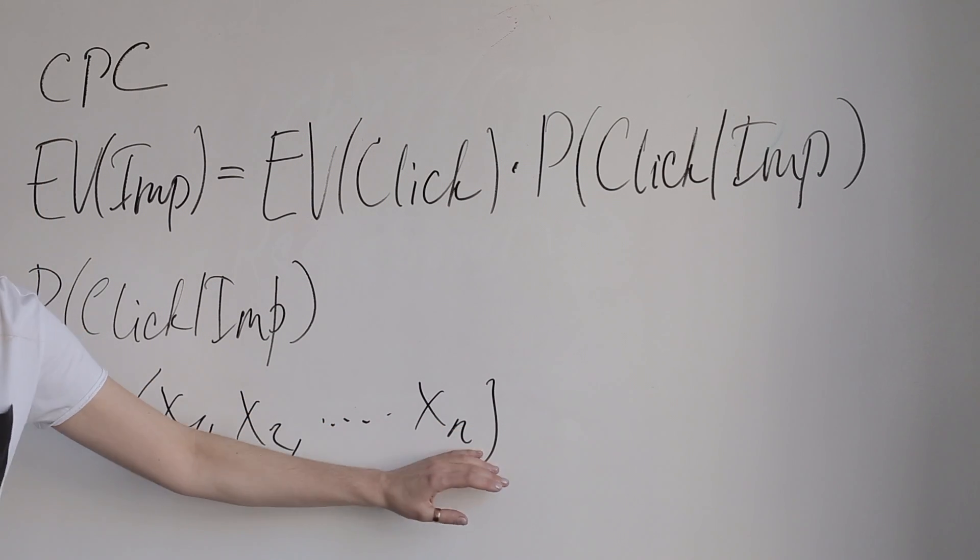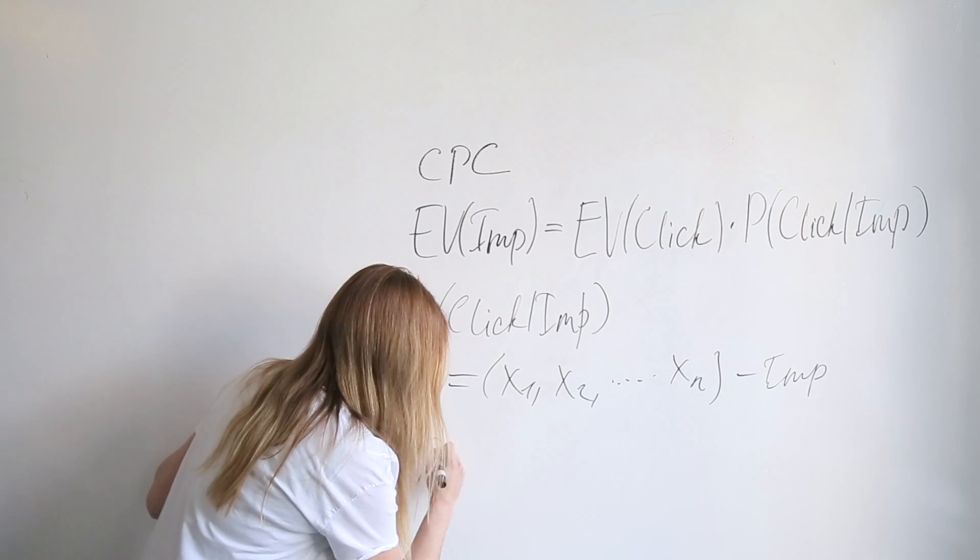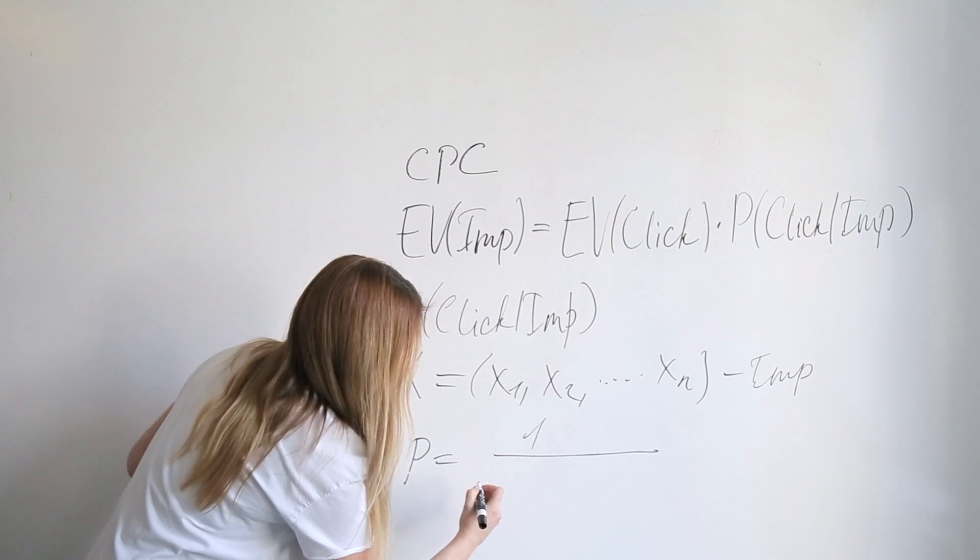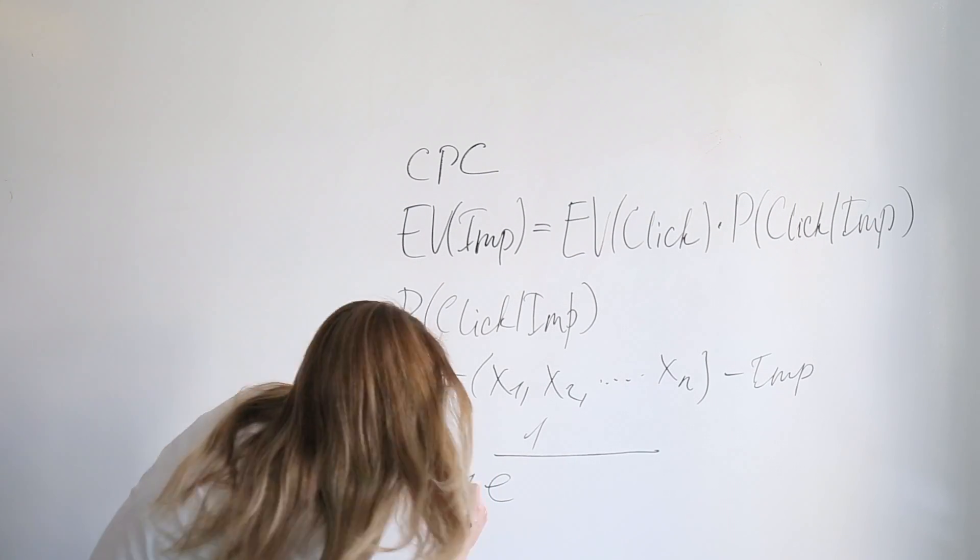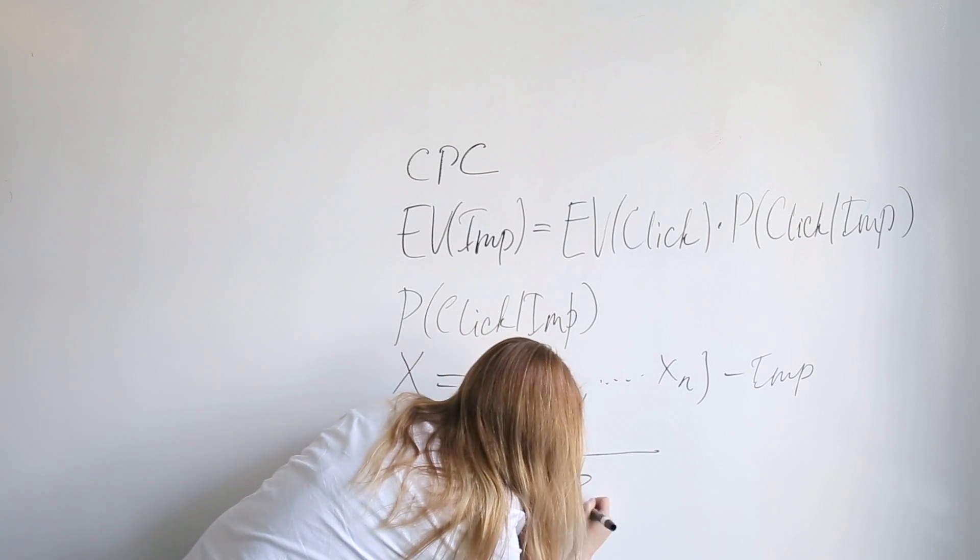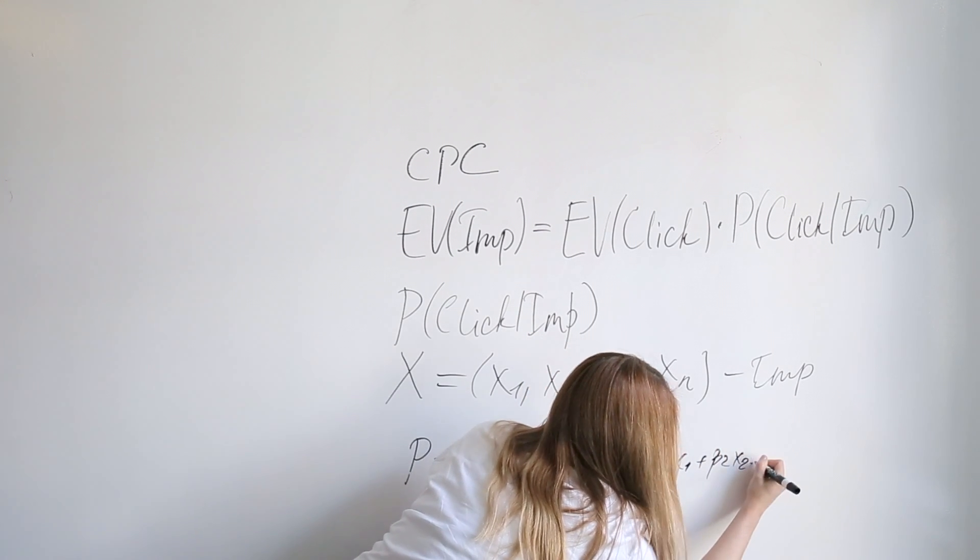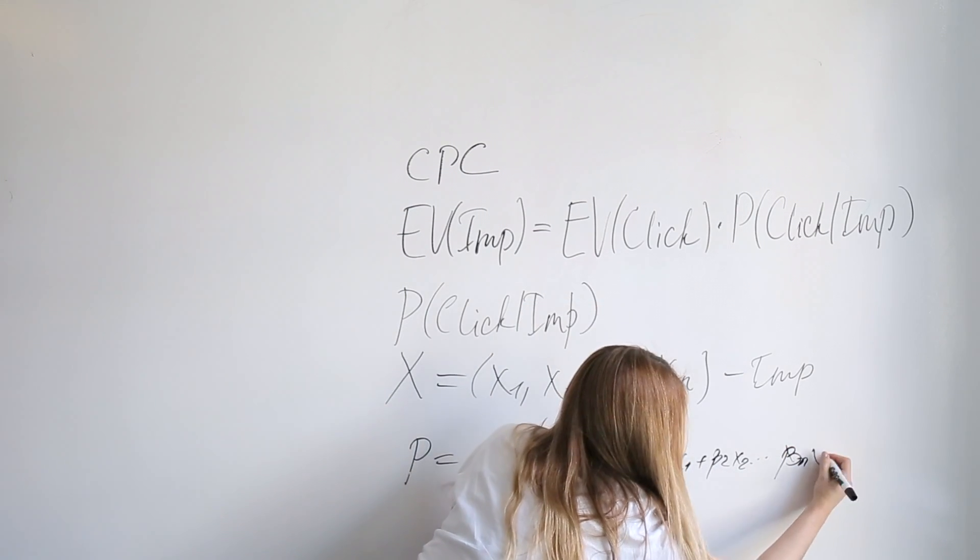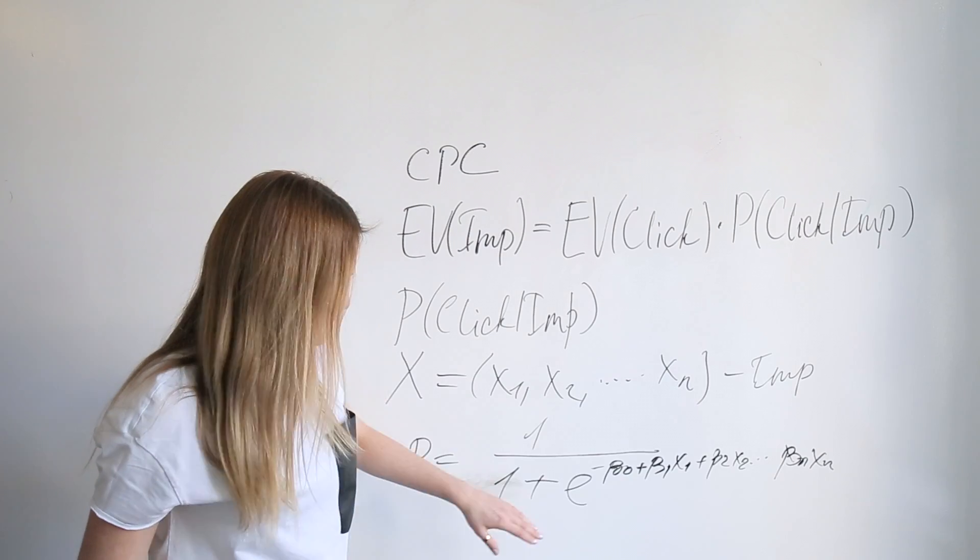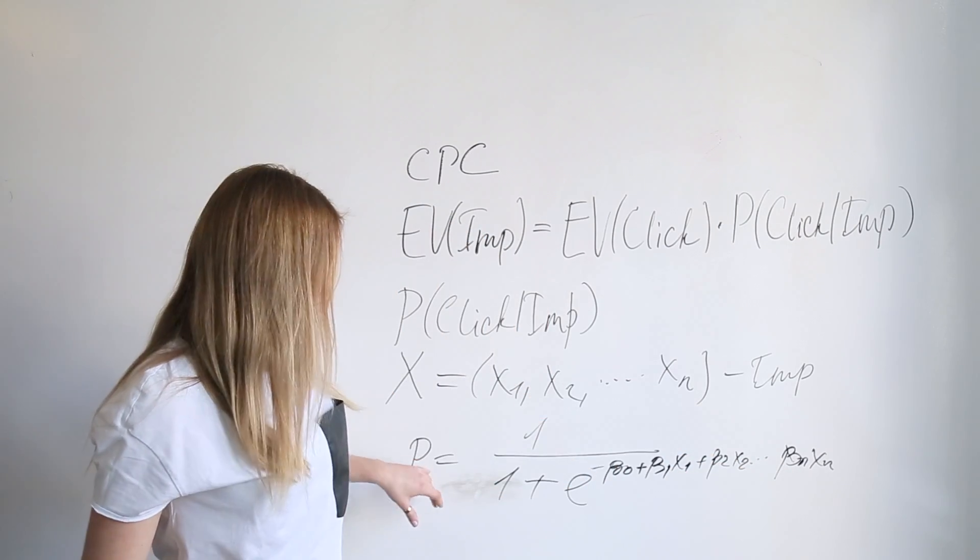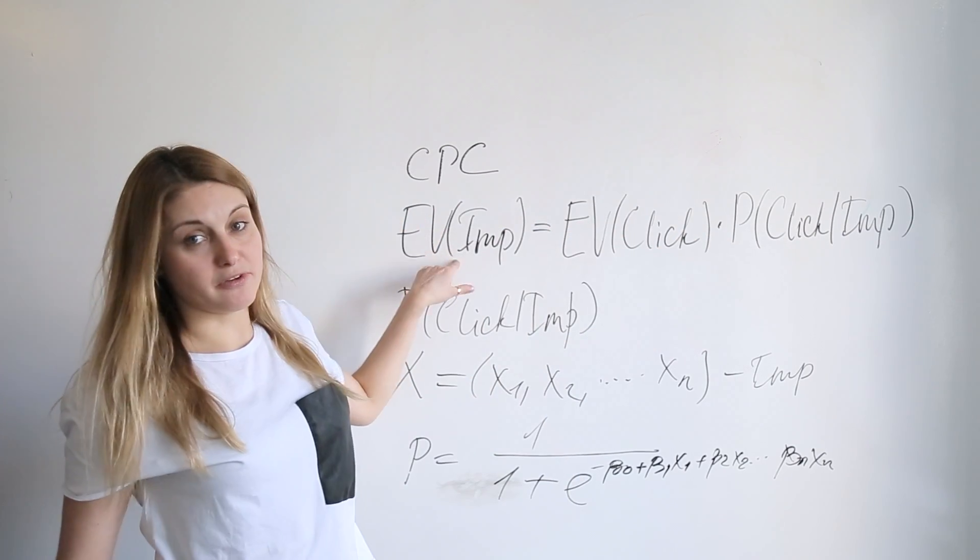We use this feature set to describe an impression. Then we plug it into the logistic regression formula: P = 1 over 1 plus exponent of negative (B0 + B1*X1 + B2*X2 and so on to Bn*Xn). The X's are from the feature set. The goal of our work is to learn these parameters to best describe the probability of a click given an impression, then upload it and get the best evaluation for your impression.